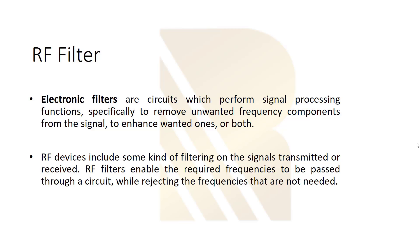We use filters to separate signals. If you have different signals and you want to choose one of them, we use filters to pass the wanted signal. RF devices include some kind of filtering on the signals transmitted or received. RF filters enable the required frequencies to be passed through a circuit while rejecting the frequencies that are not needed.